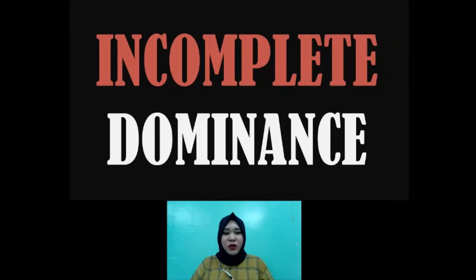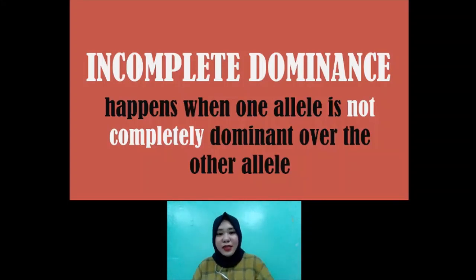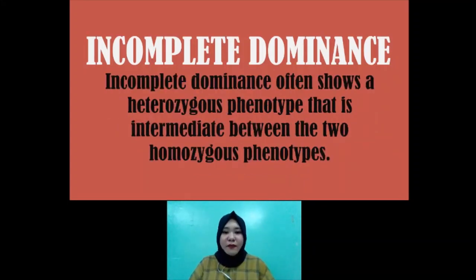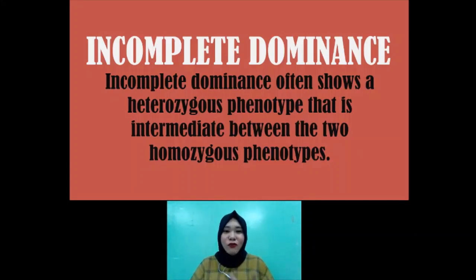Let's start with incomplete dominance. It happens when one allele is not completely dominant over the other allele. So just to avoid confusion — there is a dominant allele and there is a recessive allele, but then the dominant allele is not completely dominant over the other. That's why it's called incomplete dominance — not completely dominant. So what results from this? It often shows a heterozygous phenotype that is intermediate between the two homozygous phenotypes.